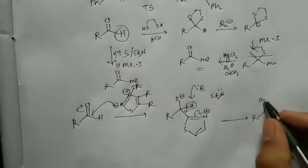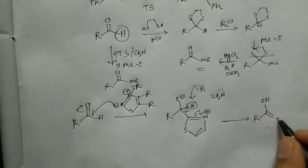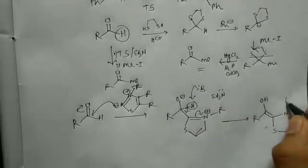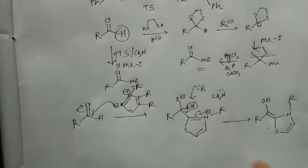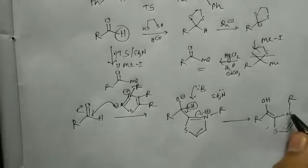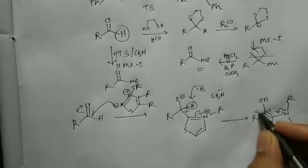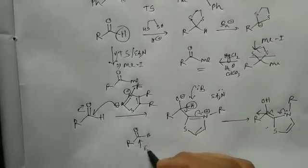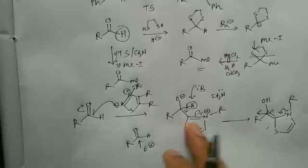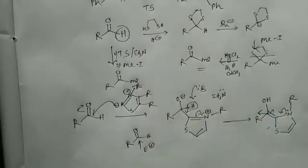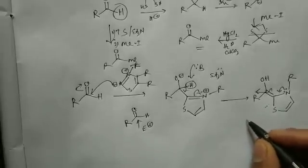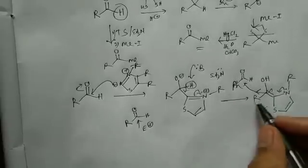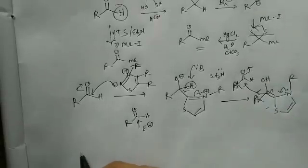The negative charge is stabilized due to the adjacent N⁺ center. The intermediate formed is reactive because if this nitrogen pushes its lone pair, this center becomes nucleophilic. The normal reactivity of a carbonyl group is electrophilic, but after addition of the thiazolium zwitterion, this carbon center becomes nucleophilic — and this is the umpolung, or reversal of polarity. If you now bring another molecule of unreacted aldehyde, it will be attacked by this nucleophilic center.